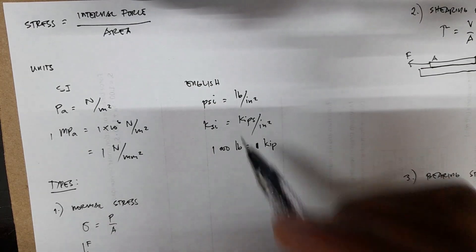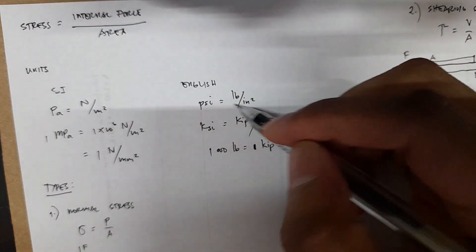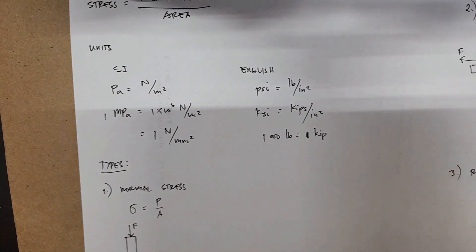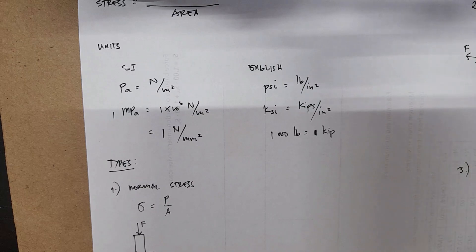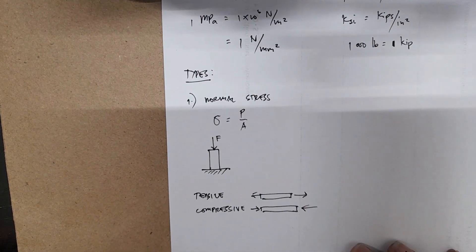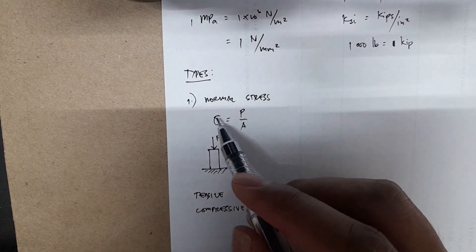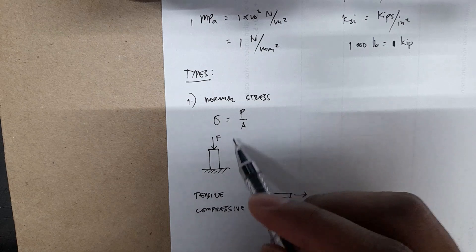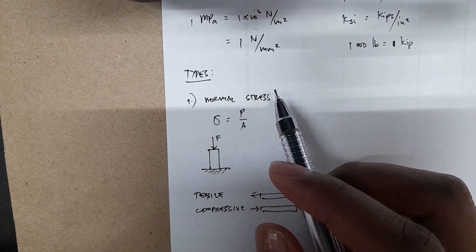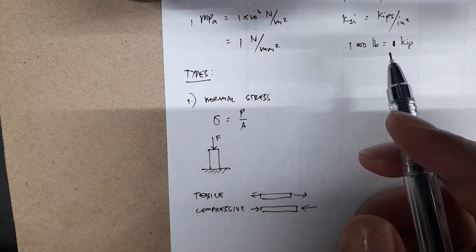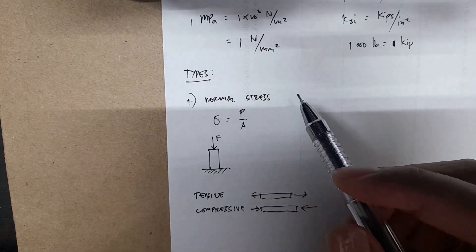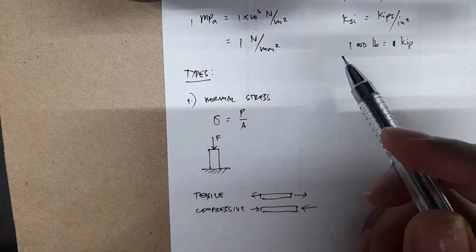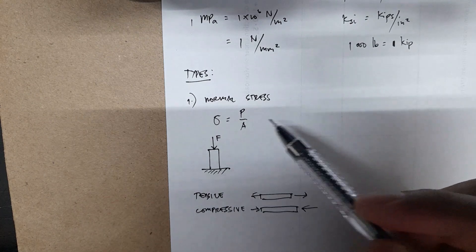Simple stress has three types. First, you have the normal stress, denoted by the symbol sigma, which equals P over A. P is the internal force, and it is loaded along the axis of your member. Sometimes normal stress is also called axial stress because the internal force is actually loaded along the axis of the member.